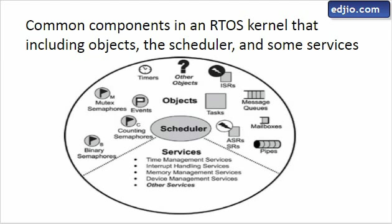The scheduler determines which task will run next. A user can write an application that creates and spawns tasks, and can use message queues or pipes to communicate between tasks, or use a mutex to protect critical sections of resources. Apart from these components, there are services available — timer management, interrupt handling, device management, and memory management — all of which can be called from your application.